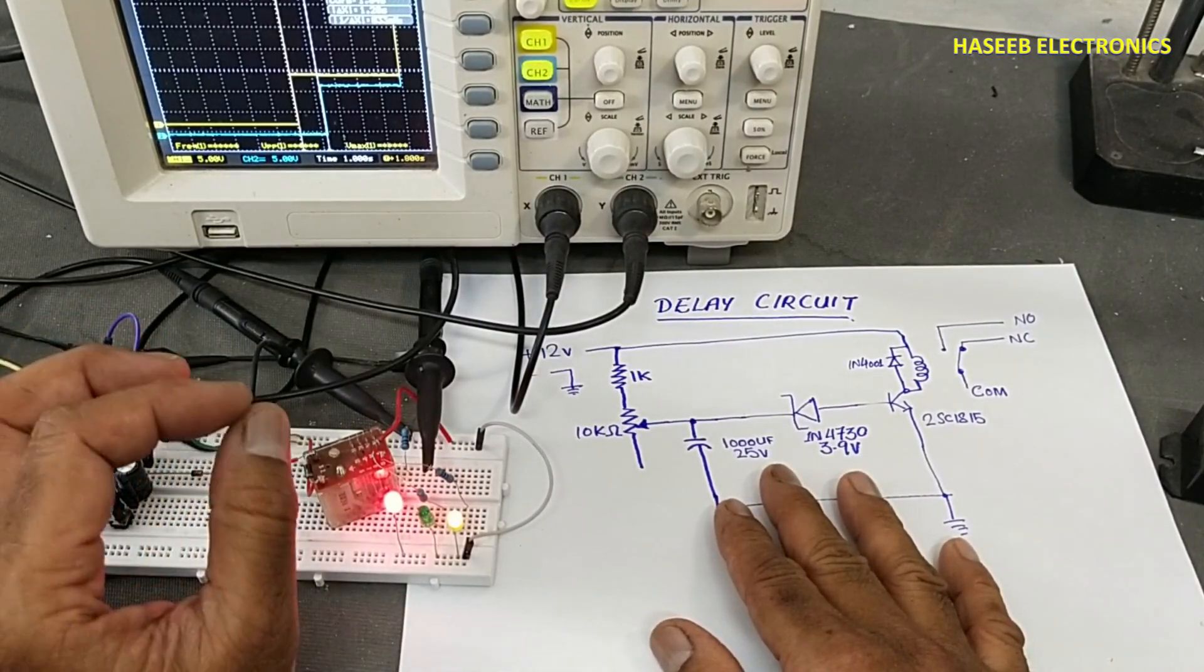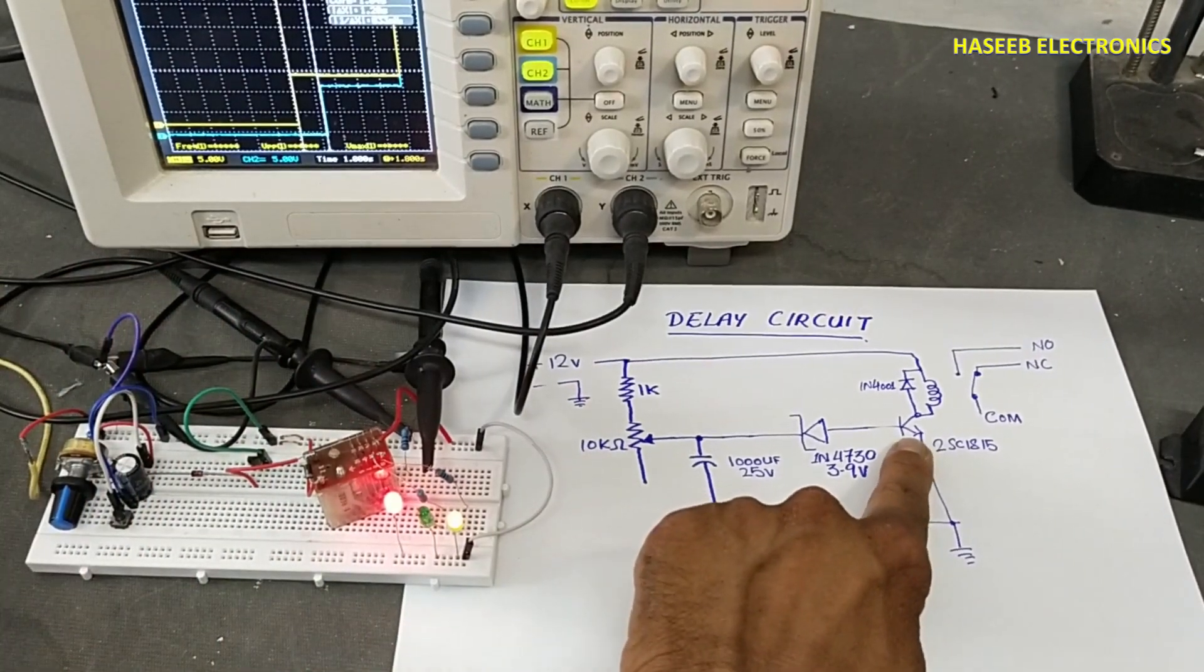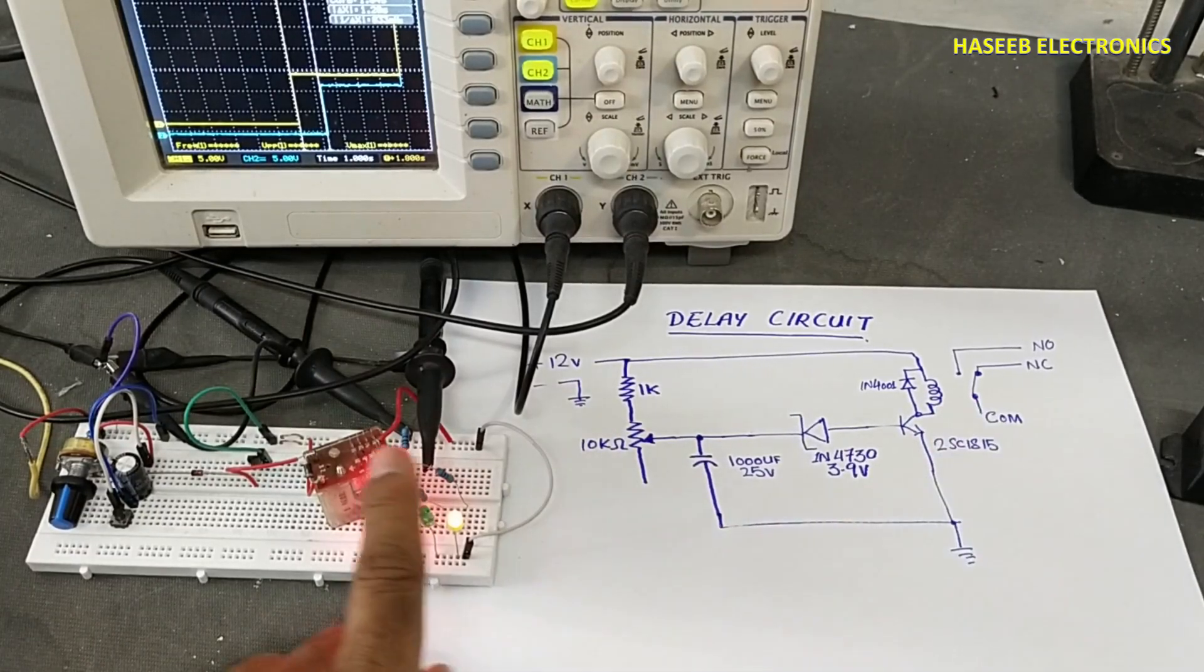So we can adjust this potentiometer to obtain our required time from 0.22 milliseconds to 2.7 seconds. We can use this one.